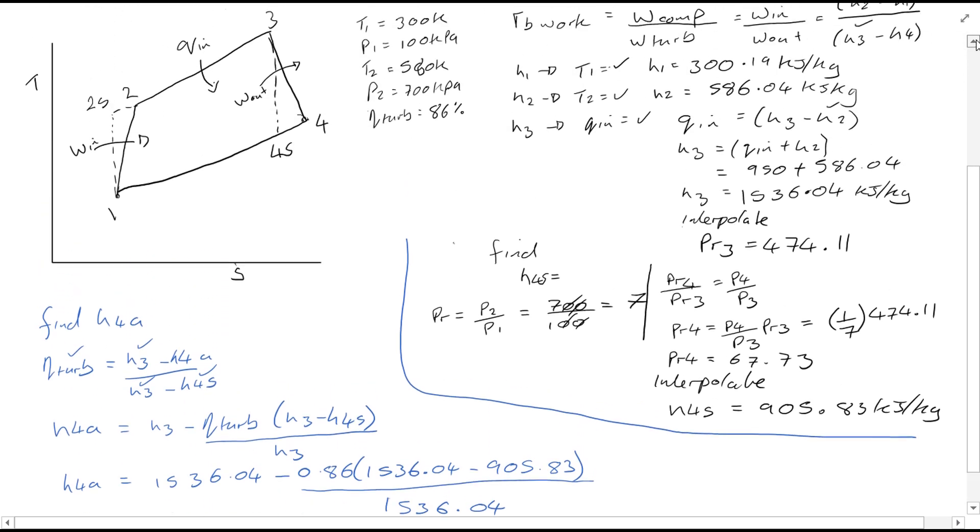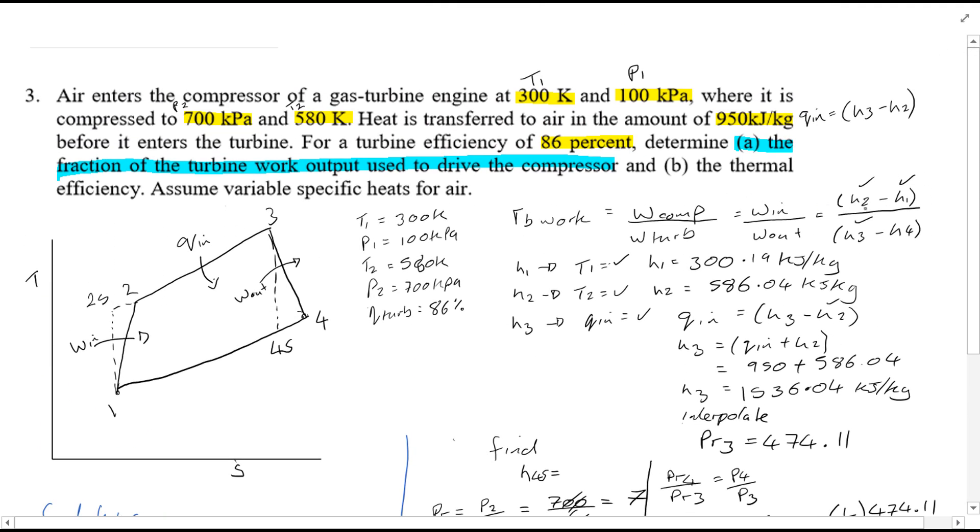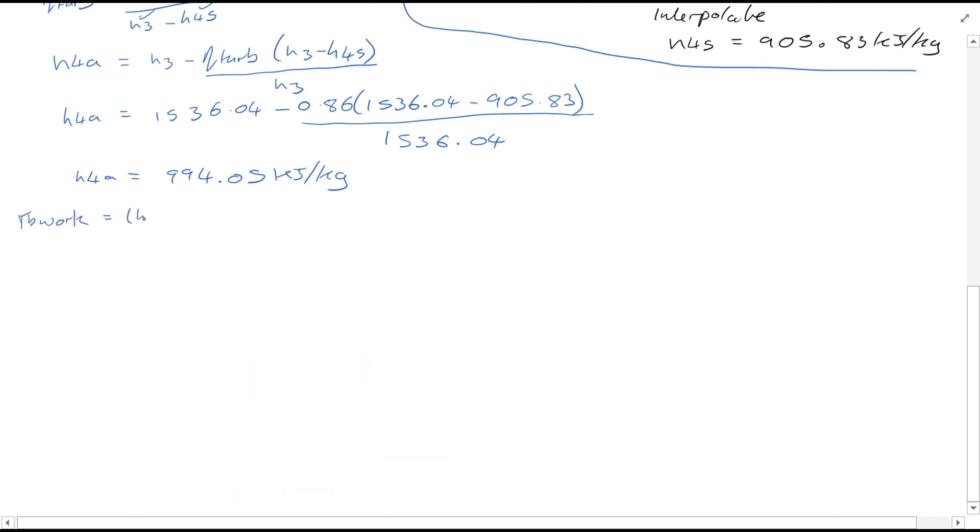Scrolling up, you'll see now we have all of the values that we need to complete this equation here and find what we're looking for. And that will give you a value of 0.5274. Therefore the answer to part A of the question, the fraction of turbine work output used to drive the compressor is in fact 52.7 percent.